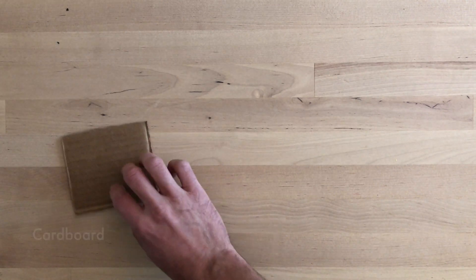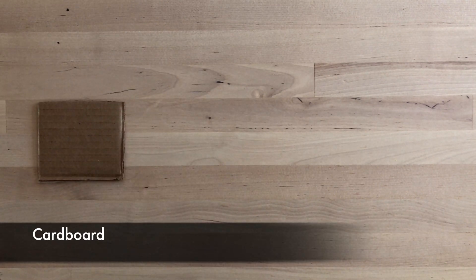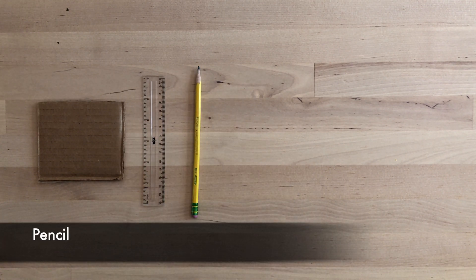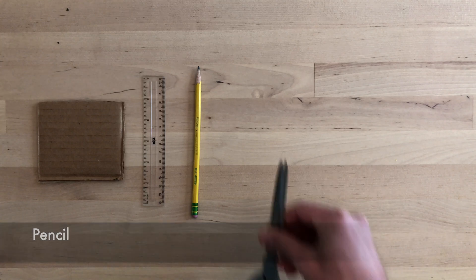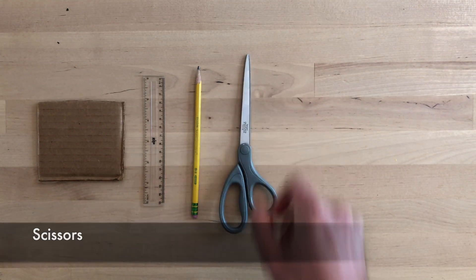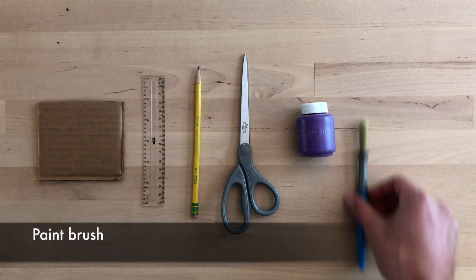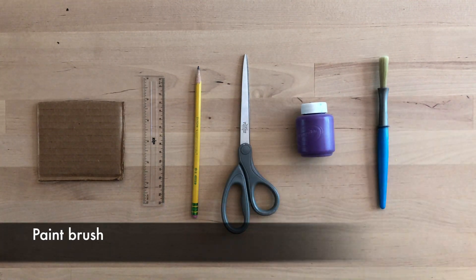Supplies! You're going to need some cardboard, a ruler or some type of measuring device, something to write with, a pair of scissors, some paint or some crayons or colored pencils, and a paintbrush if you've got some paint.